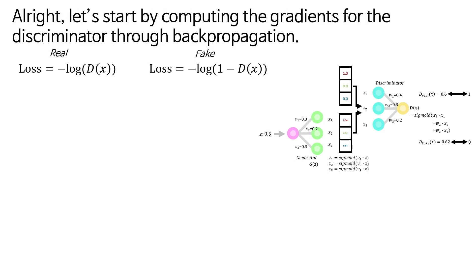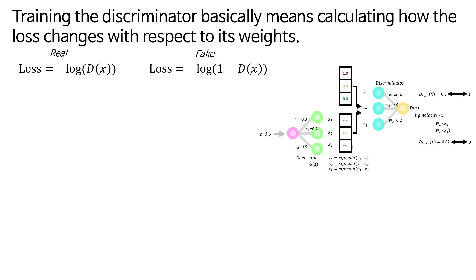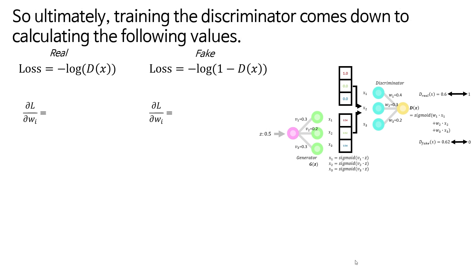Alright, let's start by computing the gradients for the discriminator through backpropagation. Of course, we'll use the chain rule. Training the discriminator basically means calculating how the loss changes with respect to its weights. So ultimately, training the discriminator comes down to calculating the following values.